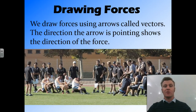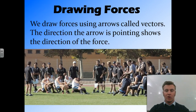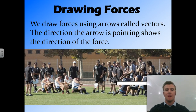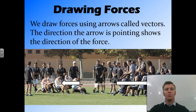When we draw forces, we use arrows called vectors. Here we've got two teams playing tug-of-war. The blue team is pulling away from the white team, so the direction of the arrow points away from the white team. Similarly, the white team is pulling away from the blue team, so the arrow for the force the white team is exerting points away from the blue team.